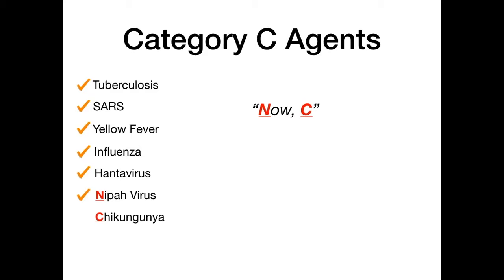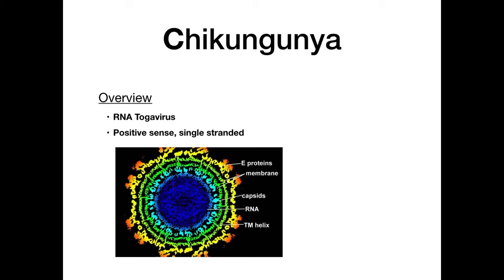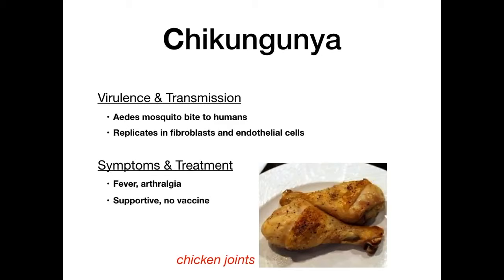The last agent for the entire lecture is chikungunya — an RNA togavirus that is positive-sense and single-stranded. It is transmitted by a bite from the Aedes mosquito and replicates in fibroblasts and endothelial cells. Symptoms are fever and arthralgia — the arthralgia or arthritis can last for a very long time, causing constant severe joint pain. There is no vaccine and treatment is supportive. Mnemonic: chikungunya sounds like 'chicken,' and when you eat chicken wings or legs you're eating chicken joints — reminding you of the arthralgias.